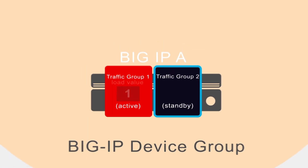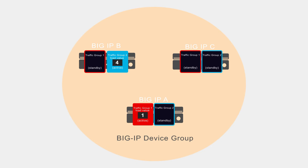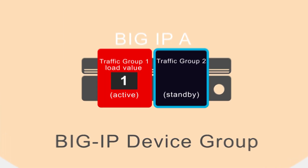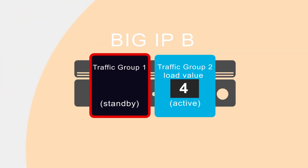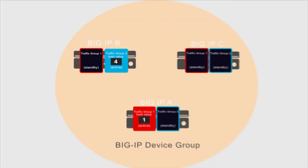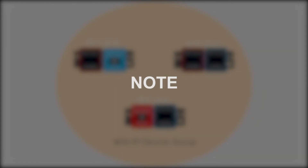The load-aware failover method causes the Big IP system to choose the next active device for a traffic group based on the traffic load value that you define on each traffic group. For example, if you define traffic group 1's load value as 1 and traffic group 2's load value as 4, then traffic group 2 is estimated to generally process 4 times the load of traffic group 1, assuming equivalent hardware platforms for the two traffic groups. One thing to note: if you configure a traffic group to use a preferred order list but the list is empty or none of the devices in the list are available, the system will default to using the load-aware failover method.